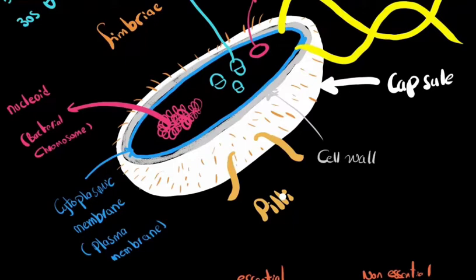In this series we'll be discussing bacterial structure and what the components of a bacterium are. First there is the capsule, then inside of it there is a cell wall — the second, grayish layer. The blue layer is the cytoplasmic membrane, the plasma membrane. Both the cell wall and the cytoplasmic membrane together are called the cell envelope.